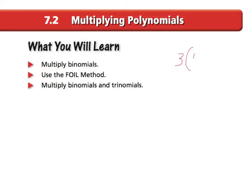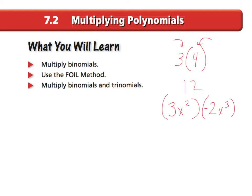First, let me explain something. 3 times 4, which is 12, is multiplying polynomials — you're taking one monomial times another monomial. For example, 3x squared times negative 2x to the third is negative 6x to the fifth. You've multiplied polynomials before.